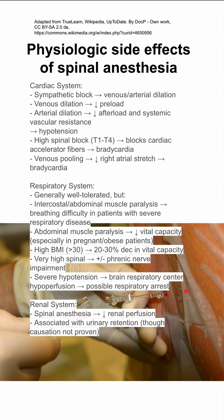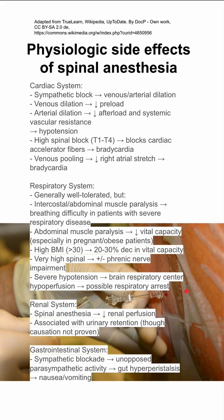In the kidney, spinal anesthesia can decrease your renal perfusion. It's associated with urinary retention, although causation has not been proven. In your GI tract, because spinal anesthesia does a sympathetic blockade, you'll have unopposed parasympathetic activity, which leads to gut hyperperistalsis. So your gut is moving faster than it normally does. This can lead to nausea and vomiting.